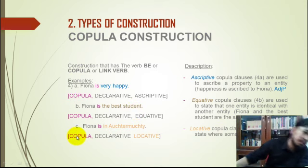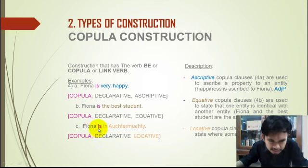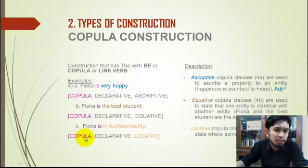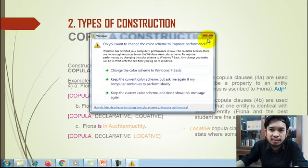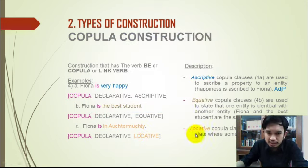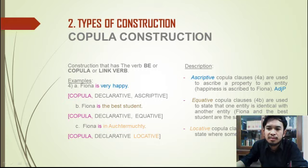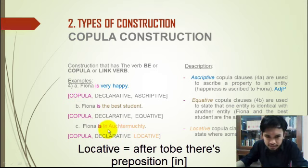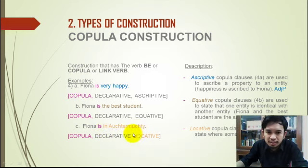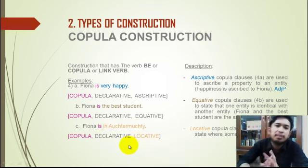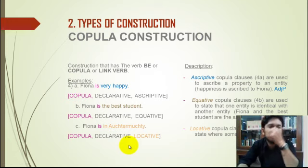The last example is 'Fiona is in the alternative machine.' 'Is' is a copula, declarative, and the last type is locative. Locative is a copula construction followed by a prepositional phrase. Here, 'in the alternative machine' is identified as a prepositional phrase, making it locative. That is what we talked about regarding copula construction.